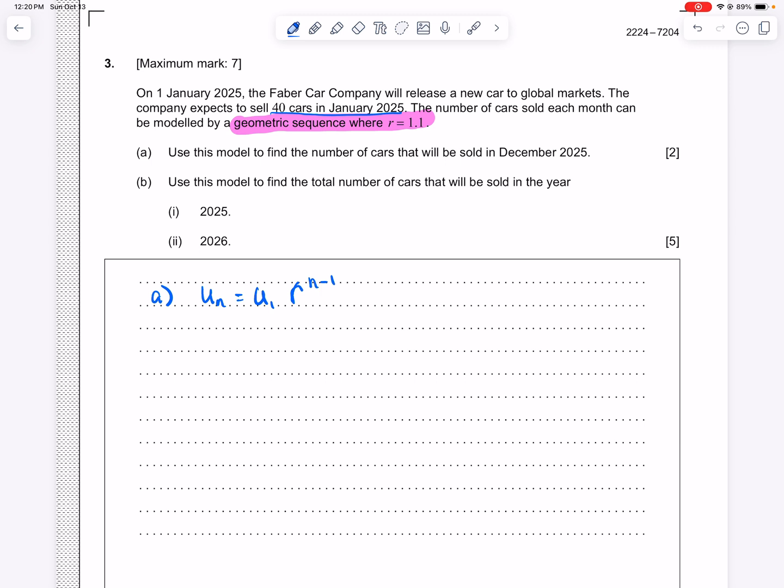All right, so we know that the starting number of cars was 40. And we know from the question that R is 1.1. And from January to December, as we said, there are 12 terms. And so 12 minus 1, and that will tell us the number of cars sold in December.